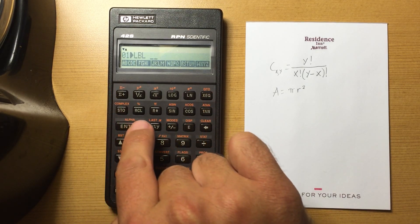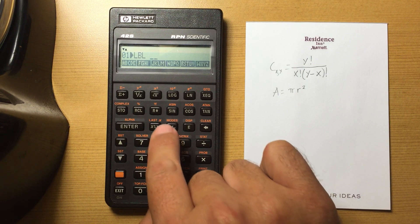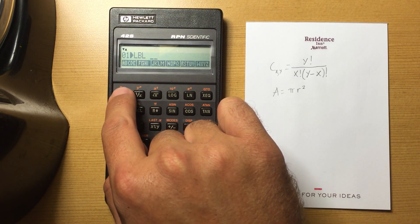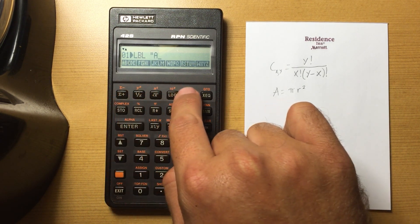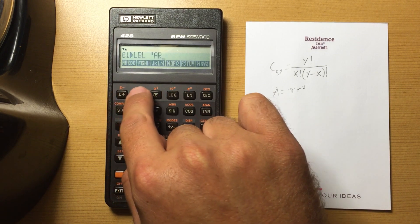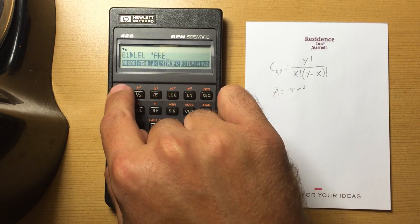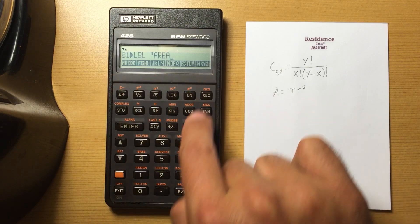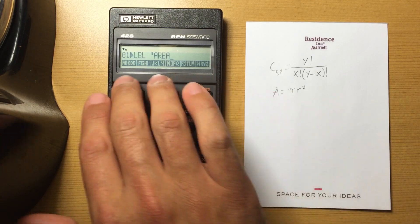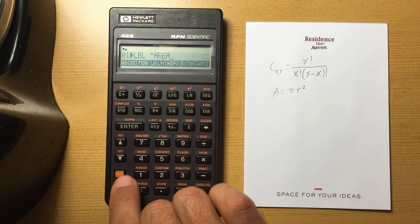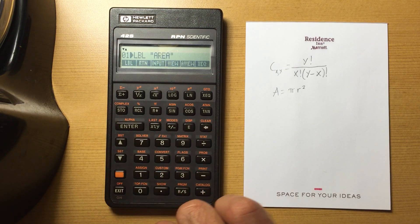So I'm going to do a label, and I am going to call this, how about area. This takes a little bit getting used to, this alpha. It does clean up the keyboard, but it is a little bit slower, and it takes some getting used to. So I entered that label, enter.